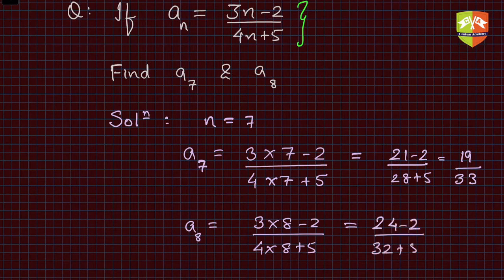Which is 24 minus 2 divided by 32 plus 5, which is 22 upon 37. This is a very simple problem. You just have to find out the 7th and 8th terms of the given sequence. So 19 upon 33 and 22 upon 37 are the two given a7 and a8.